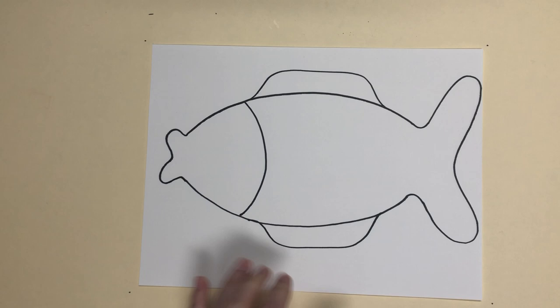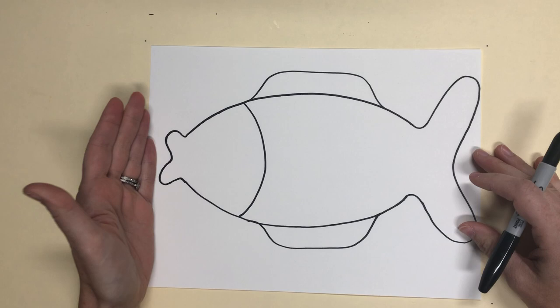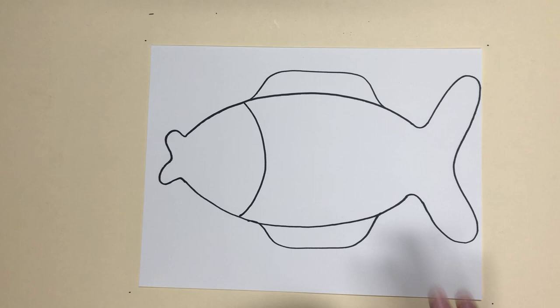Okay, now once you have a fish that you like, if you don't like it now's the time to erase and redo it. You want to make sure that it's nice and big, going from this side of the paper to this side and as wide as you can make it. I'm going to cut this out and use this as my tracer.